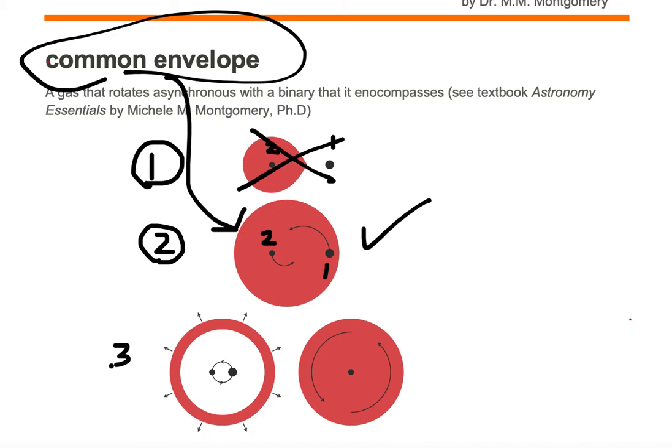Let's look at case number three. Case number three, we have both stars, one and two, but then we have this envelope that is being ejected. See how it's being thrown out in all different directions?